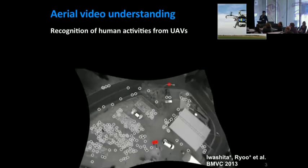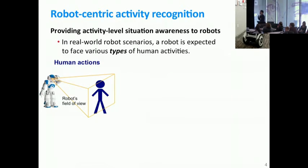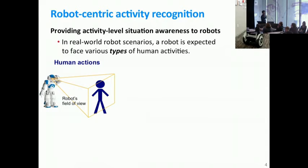However, my research interest is not limited to recognition of events and ongoing activities from passive cameras. I am also interested in providing robots activity-level situational awareness. We want to make robots understand what other humans are doing to each other, as well as what other humans are doing to the robot. In this particular scenario, there are various types of human activities the robot needs to face.